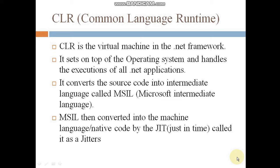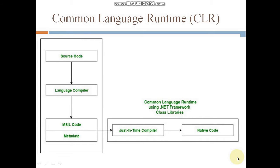Now let's look at the summarized form of the CLR. As you can see in this figure, the source code is compiled into MSIL code (Microsoft Intermediate Language). Before creating the executable file, the JIT jitters come into play and convert the MSIL code into the desired native code according to the system's specifications and architecture. CLR also provides services like thread management, memory management, exception handling, and security.